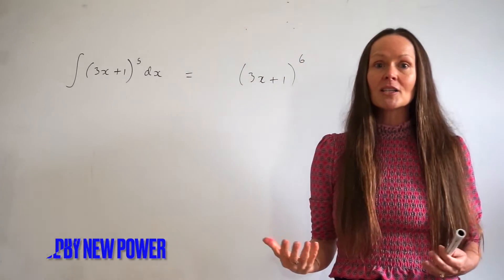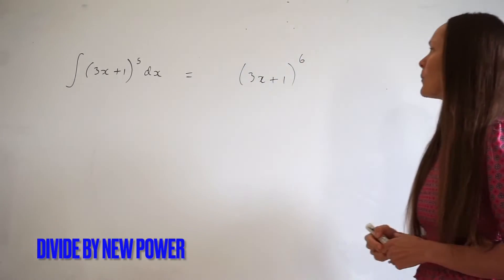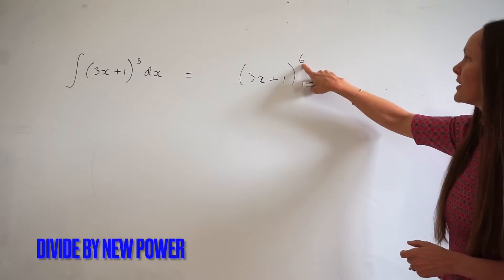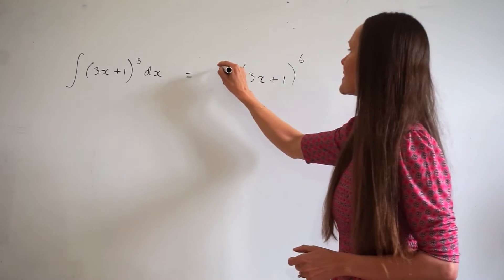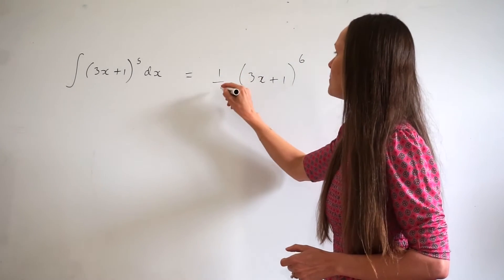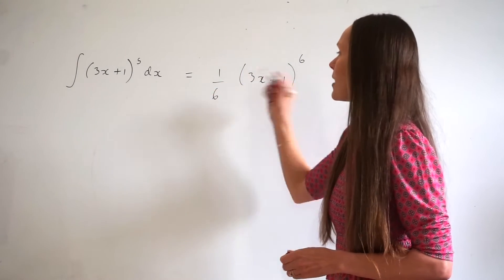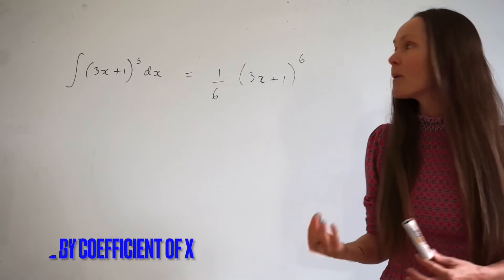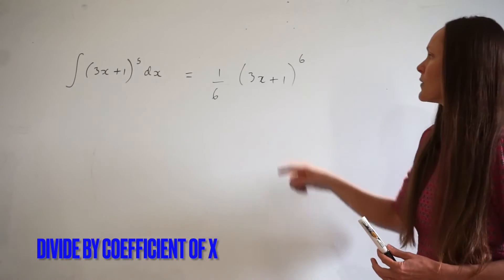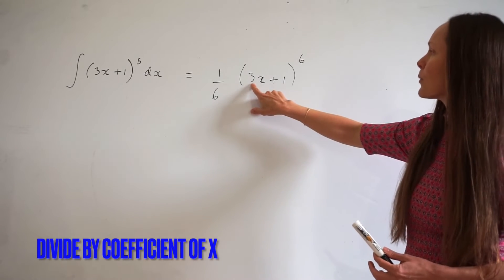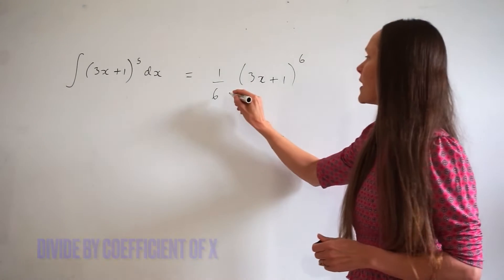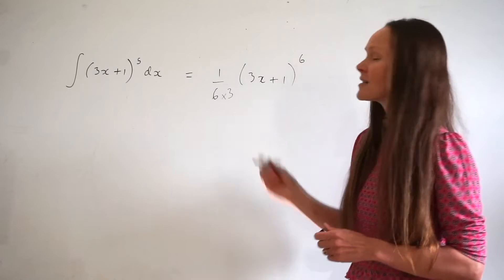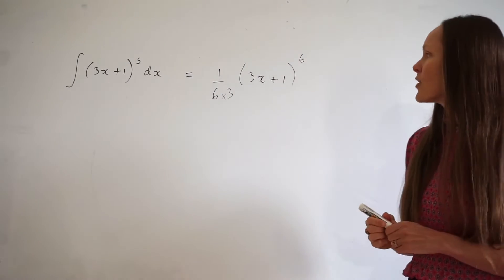Next we have to divide by that new power, so we're dividing by 6 — which is the same as multiplying by 1 sixth. We also need to divide by the coefficient of x, which is 3. Dividing by 3 is the same thing as multiplying by a third.